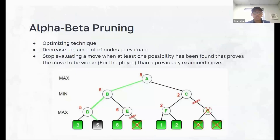In terms of optimization, Stockfish and other modern traditional chess engines use alpha-beta pruning. With alpha-beta pruning, you are able to decrease the number of nodes we need to evaluate. We stop evaluating a move or position when at least one possibility has been found that proves that the move is worse for the player than the previously examined move.